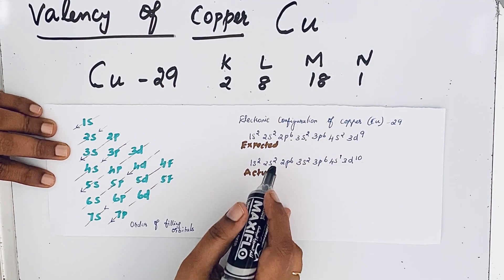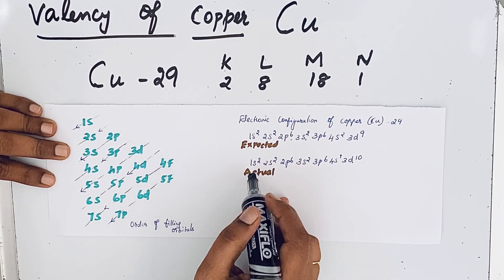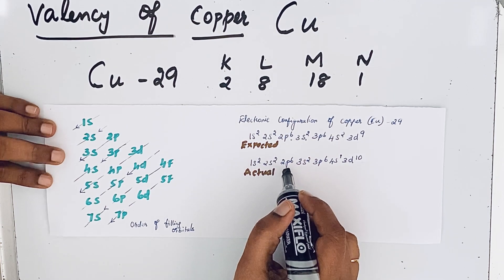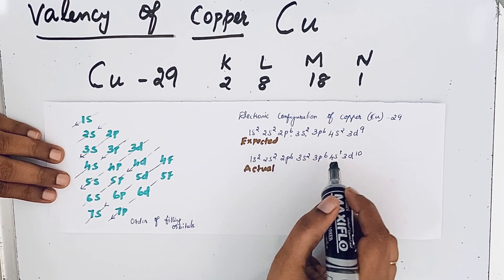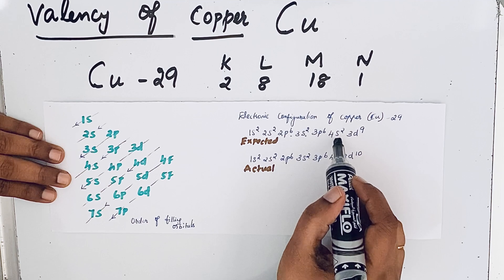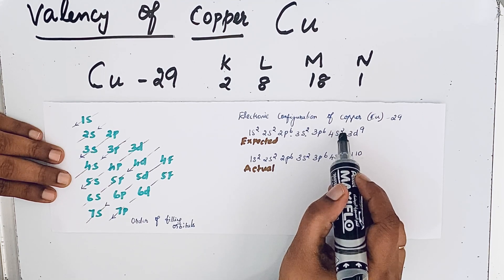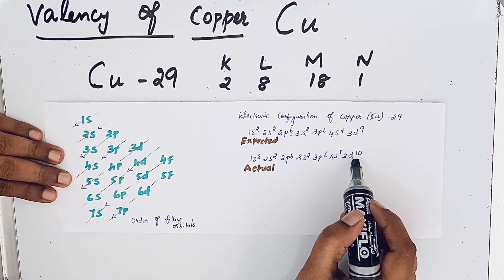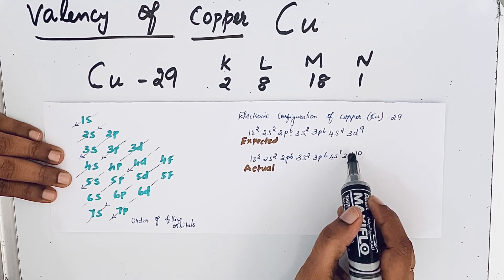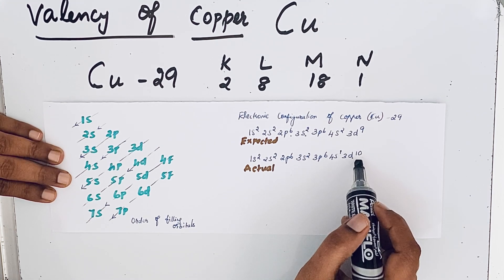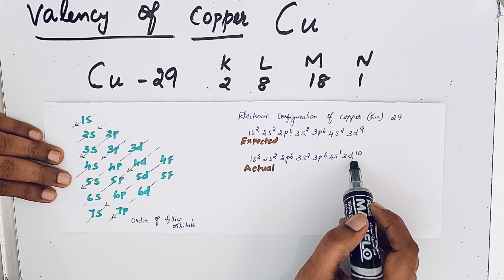The actual electronic configuration of copper is 1s² 2s² 2p⁶ 3s² 3p⁶ 4s¹ 3d¹⁰. You can see the difference here: 4s² versus 4s¹, 3d⁹ versus 3d¹⁰. That means completely filled orbitals. The maximum number of electrons in d orbital is 10.